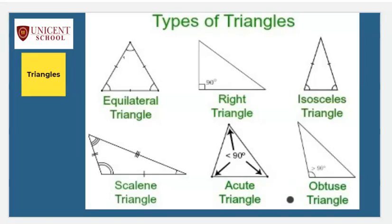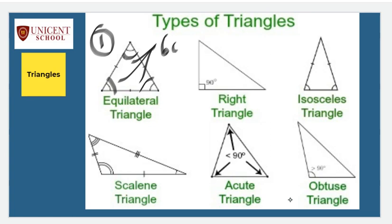Welcome to the session on triangles part 1. In this session we will learn about types of triangles and the properties of triangles. Let's start with types of triangles. We are very familiar with the different types of triangles based on sides and angles. The first one is an equilateral triangle - each angle is equal to 60 degrees, and all three sides measure the same.